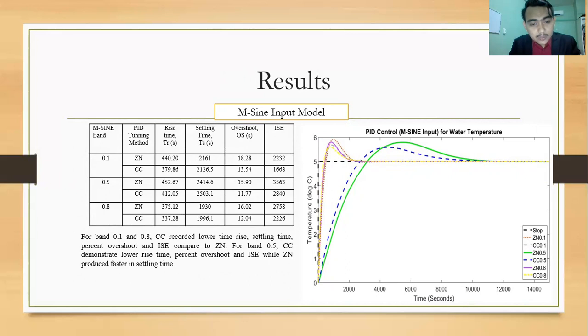For band 0.5, Cohen-Coon demonstrates lower rise time, percent overshoot and ISE while Ziegler-Nichols produce faster in settling time.